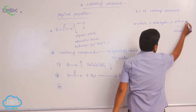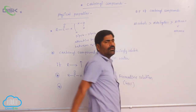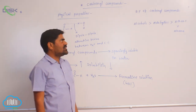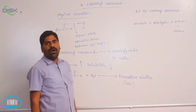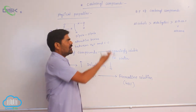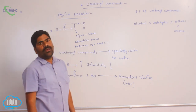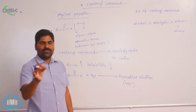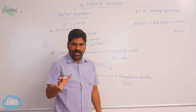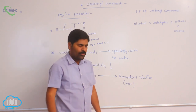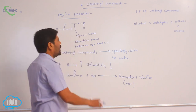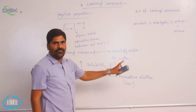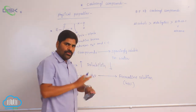So the order to remember is: alkanes < ethers < aldehydes < alcohols. Alcohols show the highest boiling points because the degree of association is very high. This is about the physical properties of carbonyl compounds.